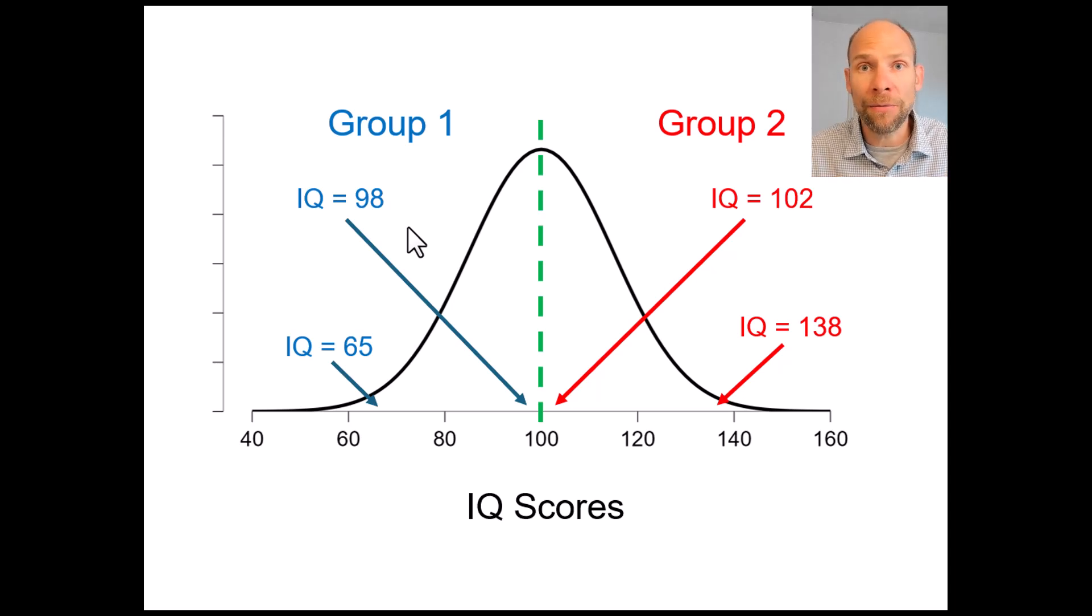and so really a score of 98 versus a score of 102 they may not be statistically different those might be individuals actually who may have the same IQ level and yet they are put into two different groups and so that does not make a ton of sense